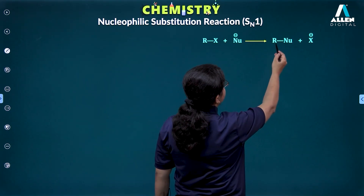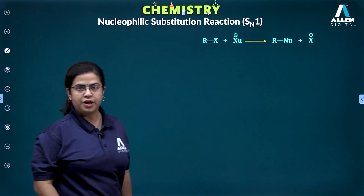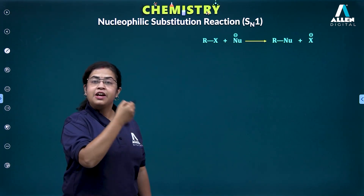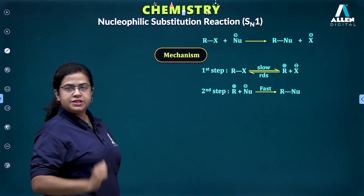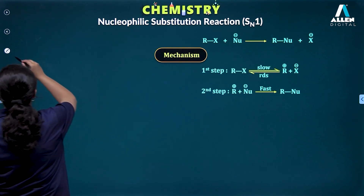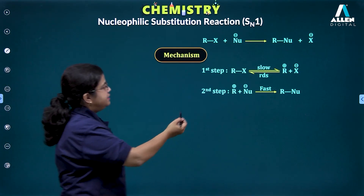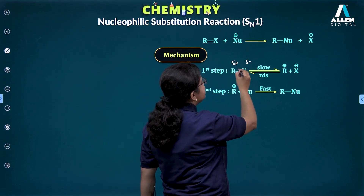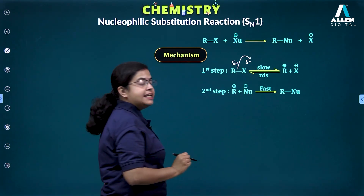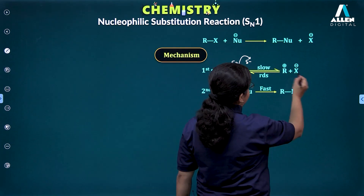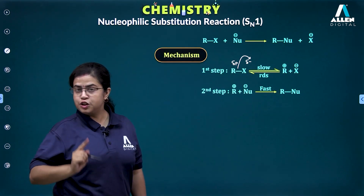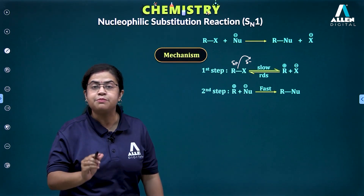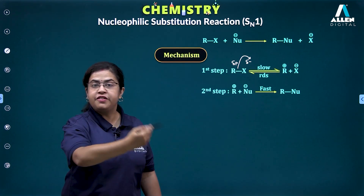In the SN1 reaction, RX + Nu⁻ gives RNu and X⁻. How does this reaction proceed? It is a two-step mechanism. In the first step, the R–X bond cleaves heterolytically due to the difference in electronegativity, forming R⁺ and X⁻. This is the slowest step, and it is reversible if the carbocation stability is not sufficient to sustain the forward reaction.